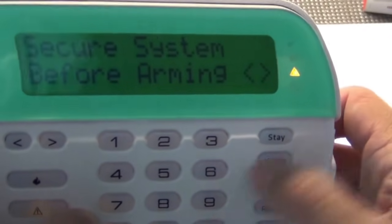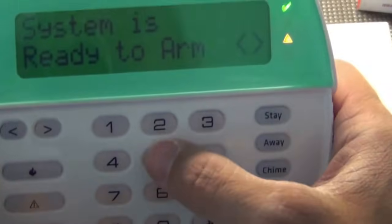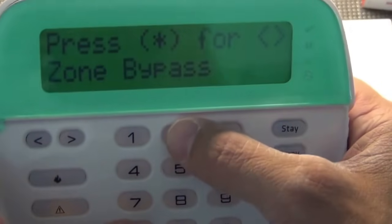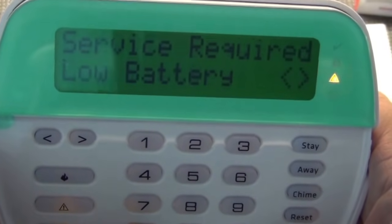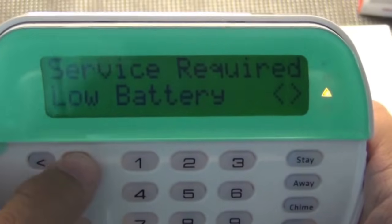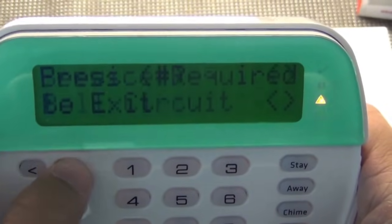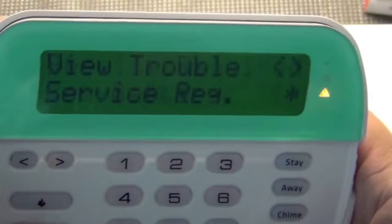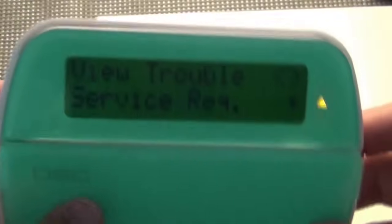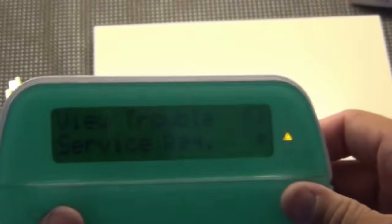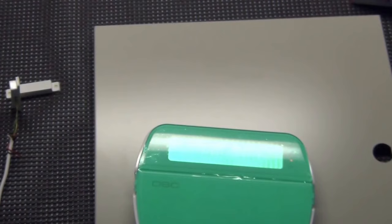I am going to hit pound, pound, pound to exit programming. I've got an orange triangle. I want to see what that is. It's probably going to say low battery and something about a siren. Service required. I'm going to hit star. It tells me low battery. If I scroll, I'm going to see bell circuit. That's just basically because right now I do not have a siren hooked up to the system and I do not have a backup battery hooked up to the system. If I hook those up, that trouble light will go off.